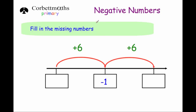Our next question asks us to fill in the missing numbers. We've got: blank, add six, is minus one; then add another six, and we've got another blank. For the right-hand blank: minus one add six brings us to zero, then one, two, three, four, five — so that's five. Six more than minus one is five. For the left-hand blank: since we added six to get to minus one, we subtract six to go backwards. Six less than minus one, counting down six, brings us to minus seven. So our two missing numbers are minus seven and five.